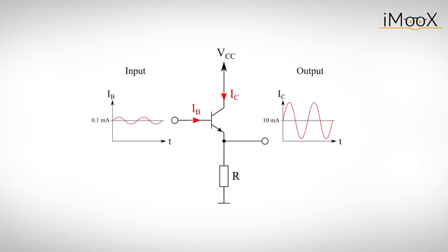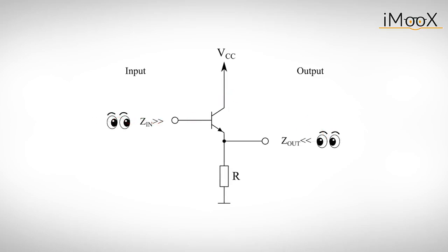And two, a small change of the input voltage implies a small change of the input current, which causes a big change of the output current. One could also say, that the input impedance looking into the base is much larger than the output impedance looking into the emitter.